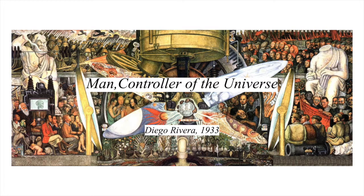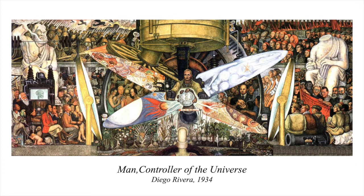Man at the Crossroads was originally created by Diego Rivera in the Rockefeller Center in New York. The painting was controversial because it included images of people relating to the Soviet Union. Despite protests by artists, Nelson Rockefeller ordered its destruction before it was completed. Only black and white photographs of the original incomplete mural existed, taken when Rivera was forced to stop work on it. Using the photographs, Rivera repainted the composition in Mexico under the title Man, Controller of the Universe.